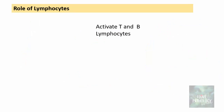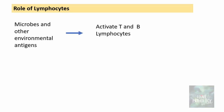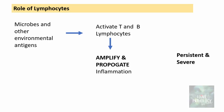These peripheral T cells, and even B cells, have to be activated to be functional. They are activated by microbes and other environmental antigens. Once activated — either T or B cells — they amplify and propagate inflammation, and that is when the inflammation becomes persistent and severe. This process also leads to the generation of long-lived memory cells, which also help in a process called granulomatous inflammation, which I have discussed in detail in another video.